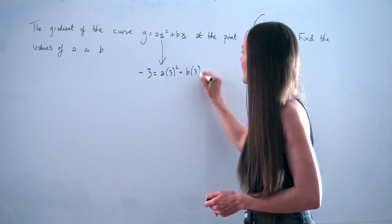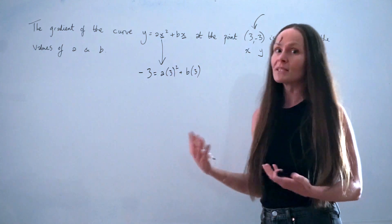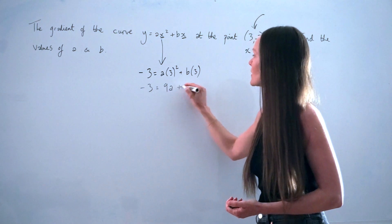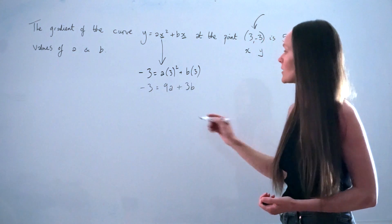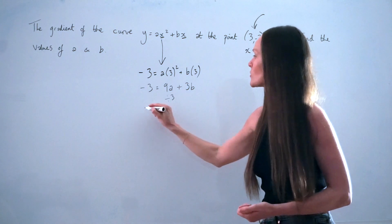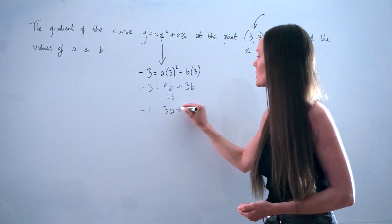Now I'm just going to simplify. 3 squared is 3 times 3, which is 9. So I have negative 3 equals 9a plus 3b. And if you like, you could also divide everything by 3 in this equation so that you have negative 1 equals 3a plus b.